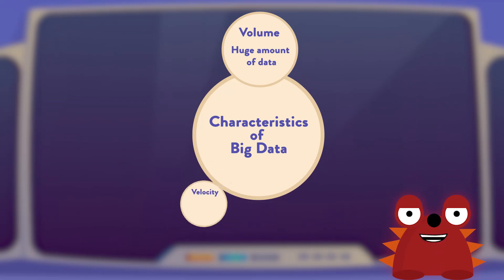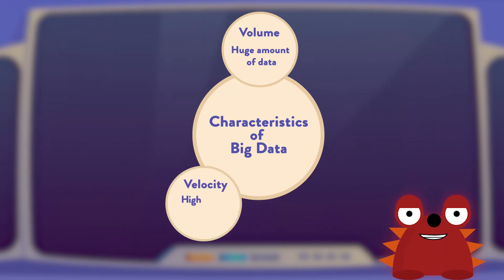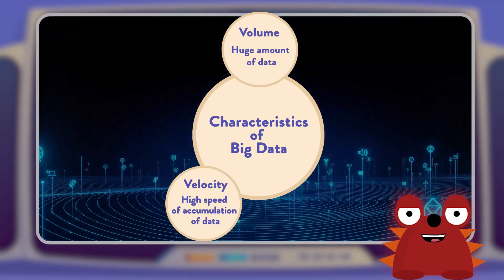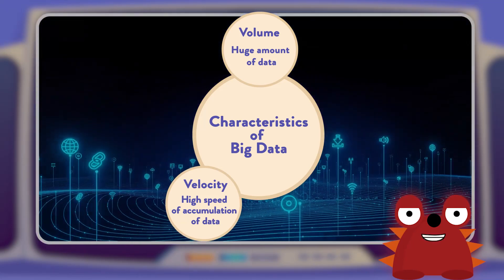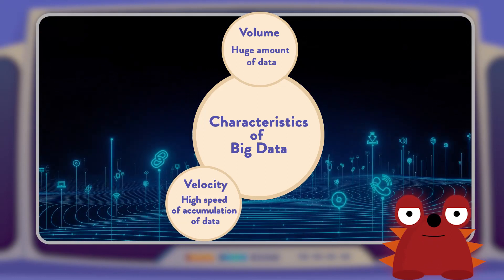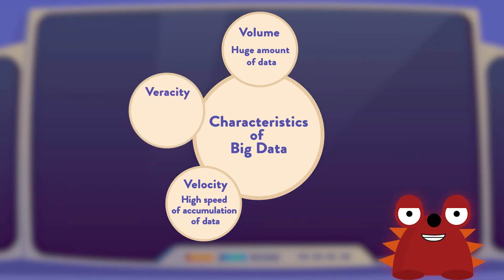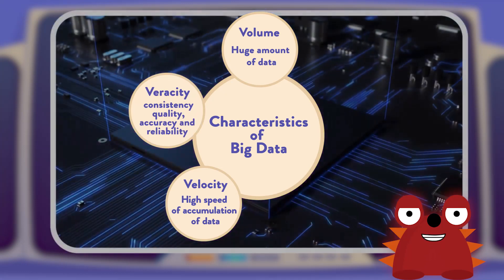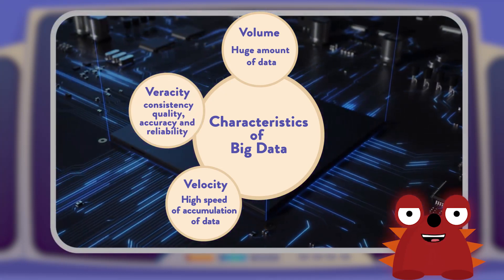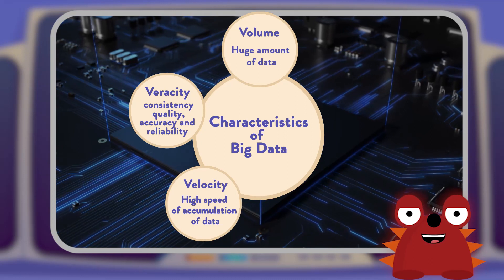Second is velocity, which refers to the high speed of accumulation of data. For example, social media platforms generate a massive amount of data every minute, meaning at a high velocity. Next is veracity, which refers to the consistency, quality, accuracy and reliability of Big Data. In other words, veracity is the process to sort out and manage Big Data.